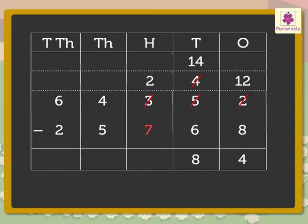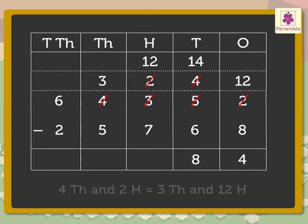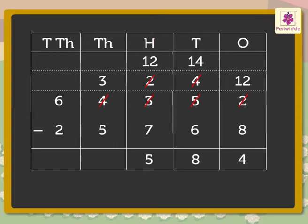Now subtract the hundreds. That is, 2 minus 7. Here, the hundreds are not enough, so we regroup the thousands. Thus, 4 thousands and 2 hundreds is equal to 3 thousands and 12 hundreds. Therefore, 12 minus 7 is equal to 5 hundreds.